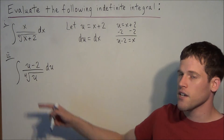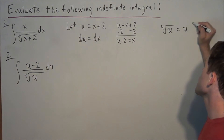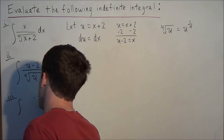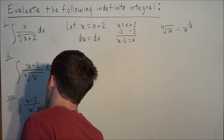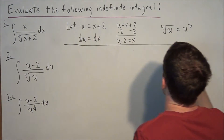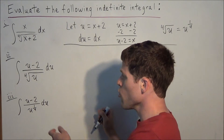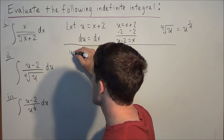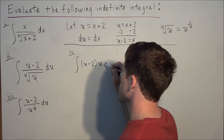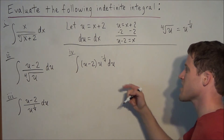We need to replace x with u minus 2 and target the fourth root of u. By the definition of rational exponents, the fourth root of u equals u to the one-fourth power. There's also a property of exponents telling us that to move an exponent term from the denominator to the numerator, we negate the exponent. So we write the integral of u minus 2 over u to the one-fourth as u minus 2 times u to the negative one-fourth, du.